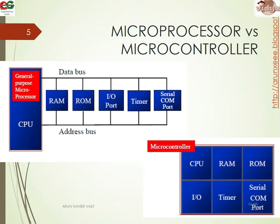In this figure, you can see the general purpose microprocessor. We need to connect externally RAM, ROM, I/O ports, timer, serial communication, etc., through buses — data bus and address bus. But if you consider the microcontroller, in a single chip we can see all these items: the CPU, RAM, ROM, I/O, timer, etc., all are inside one block.